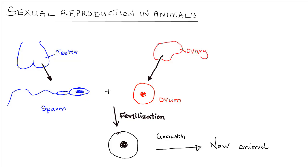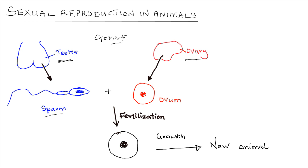Sexual reproduction in animals. This process involves fertilization, which is the fusion of haploid gametes to form a zygote. In animals there are sex organs known as the gonads. In the male there is a testis and in the female the ovary, responsible for the formation of the gametes. The male gamete produced from the testis is known as the spermatozoon, or simply the sperm, while the female gamete produced by the ovary is known as the ovum.